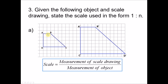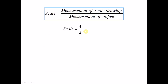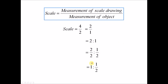So four divided by two gives four over two. We want the scale in ratio form, so simplify: divide by two on both sides to get two over one. Write this in ratio form — we want this to equal one, so divide both sides by two. The scale is one to one-half.